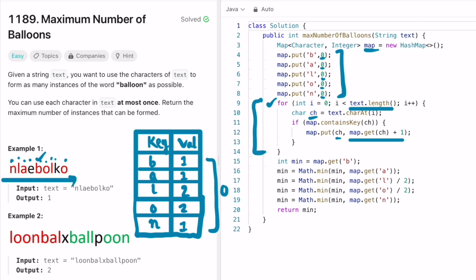Now we know you can use only each character once. You find the minimum among all the values present. First I'm starting with a variable min and getting the count of B to start with. B's count is one so min is equal to one.